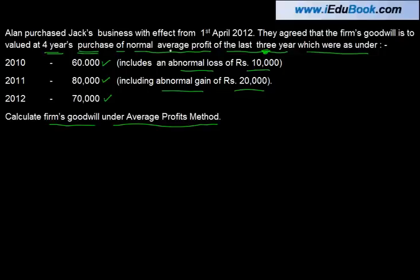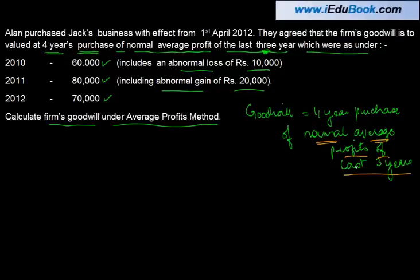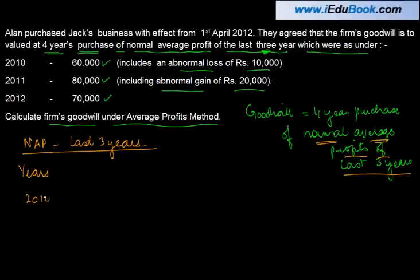The first thing we need to do is calculate goodwill based on 4 year purchase. So the value of goodwill is equal to 4 year purchase of normal average profits of the last 3 years. I need to calculate what are the normal average profits of the last 3 years — which are 2010, 2011, and 2012.